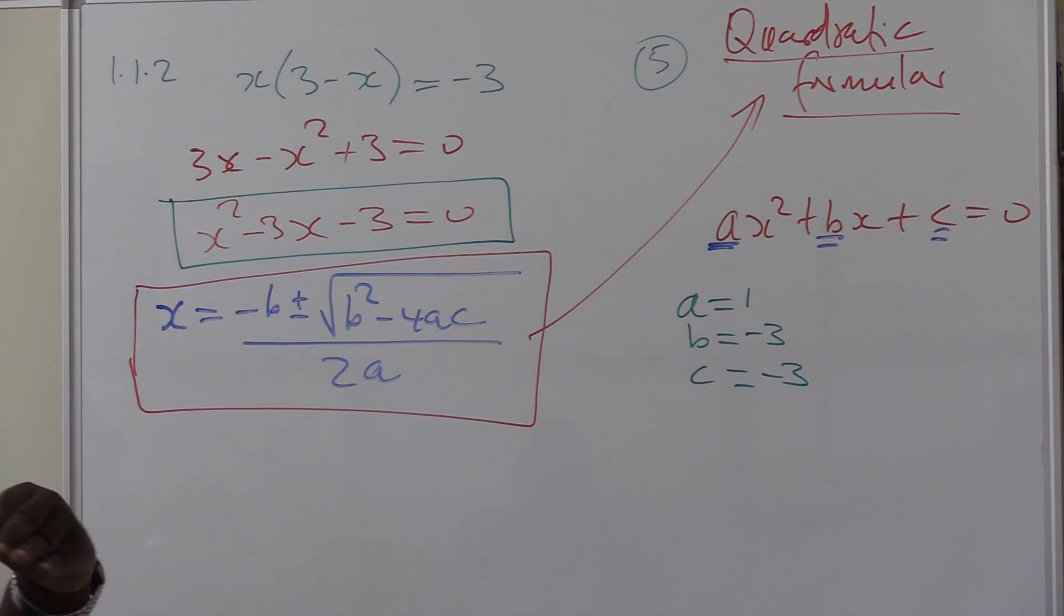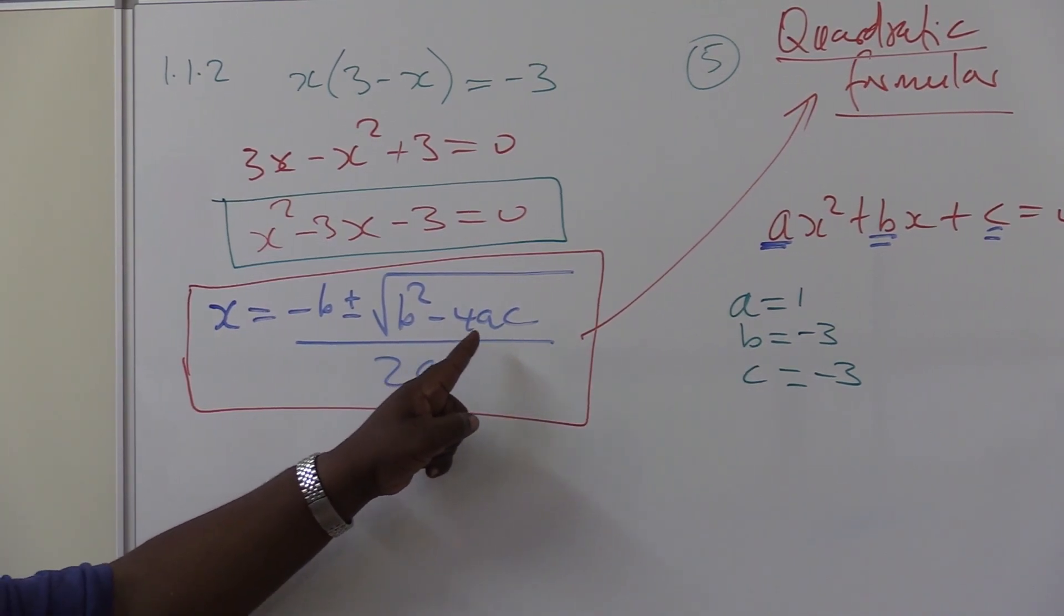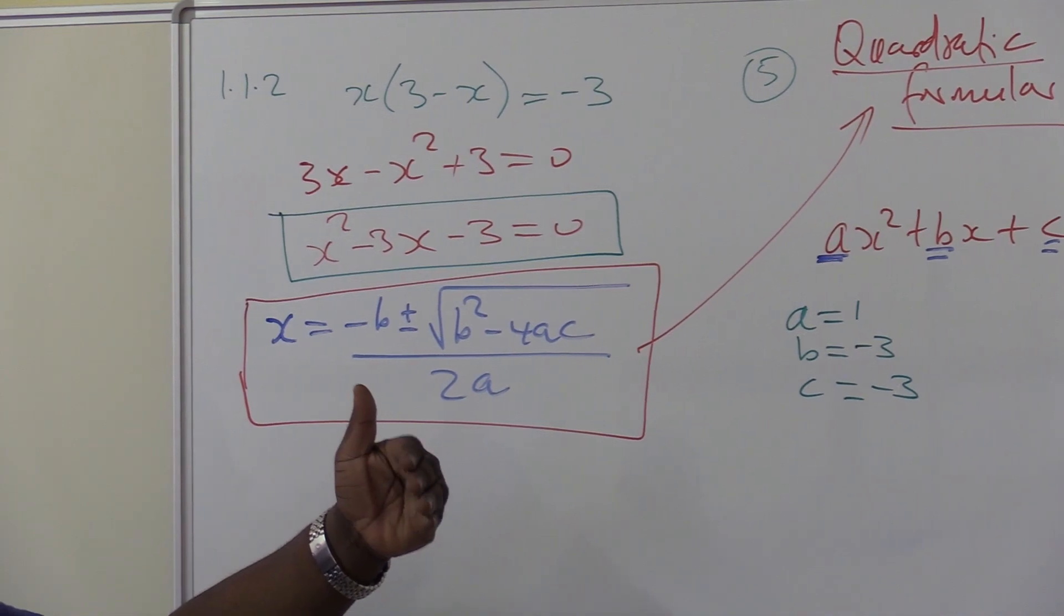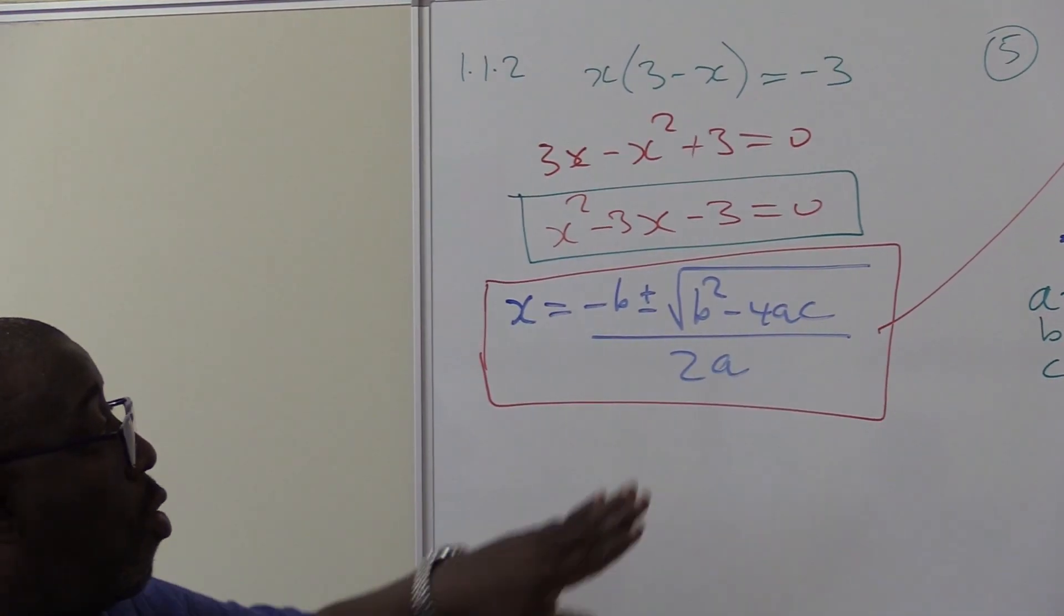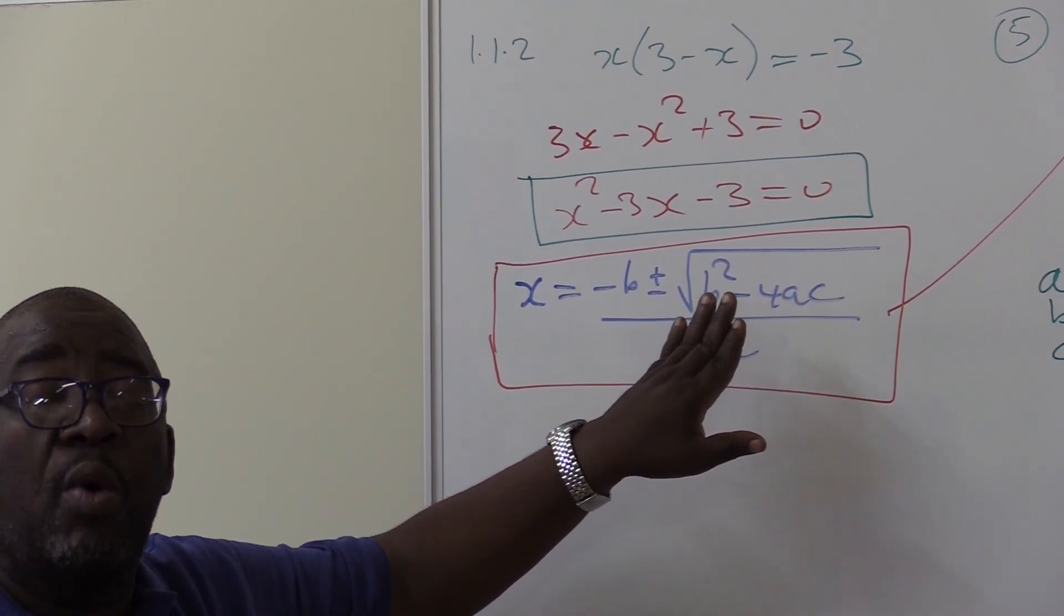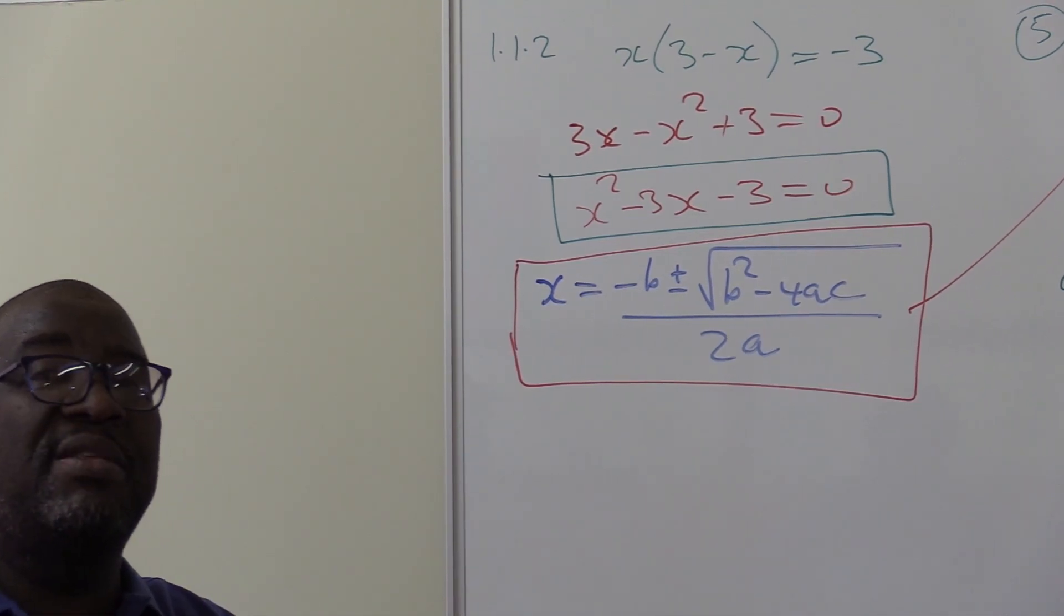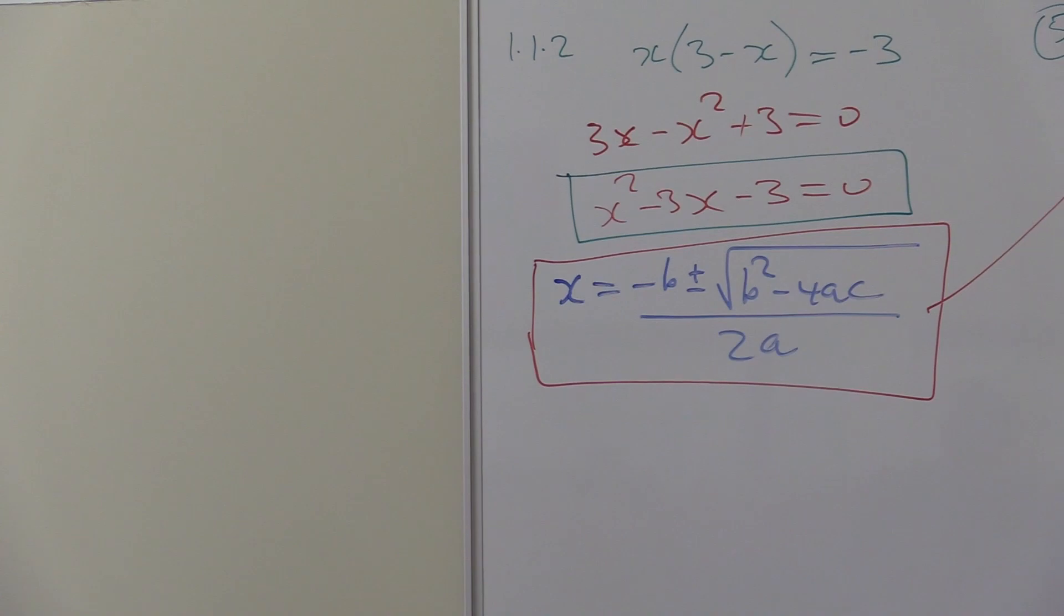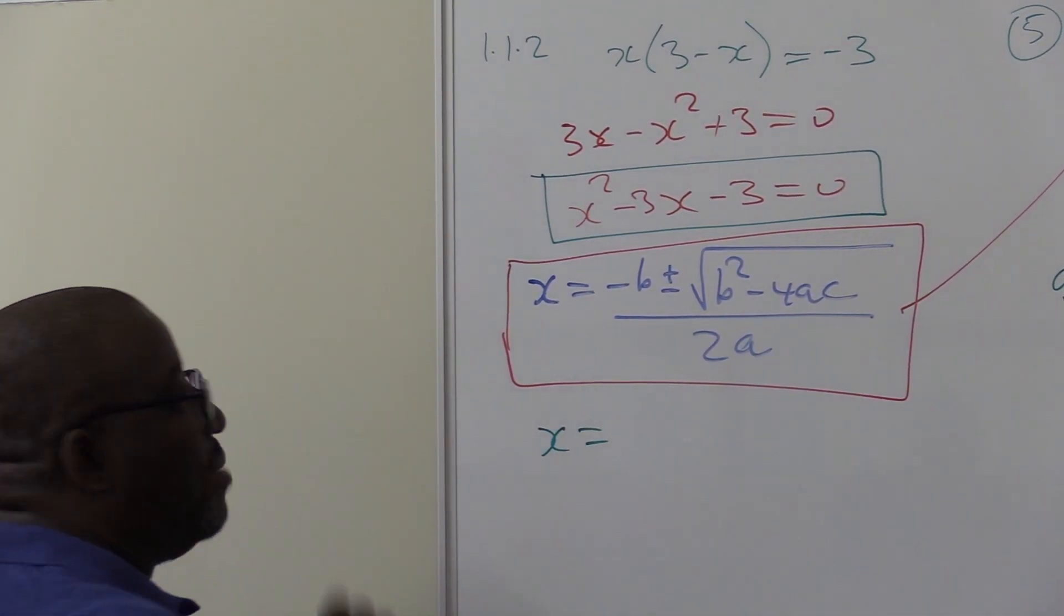Remember one thing. When we deal with the nature of roots later on, this becomes important. B squared minus 4AC. It's called the discriminant. We'll be using it again when we do the subtopic under algebra called the nature of roots. What is inside the squared sign is called the discriminant B squared minus 4AC. It is the one that determines the nature of roots. But let's move on with this topic. Now we've got our values. We've got X is equal to better substitute.